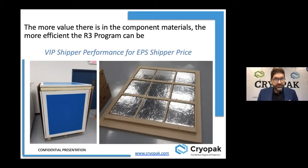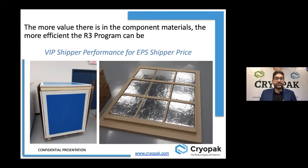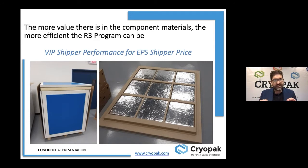Because we reuse, we can put more value in the packaging. The pallet transporter shown here is a pallet-size shipper. We transform it with a VIP — vacuum insulated panel — which is very high performance. Because it is a multi-use solution, at the end we can offer VIP performance at EPS price. This is really the key of the R3 program: you can have a better packaging because we reuse it.